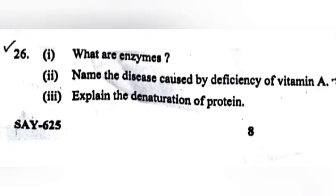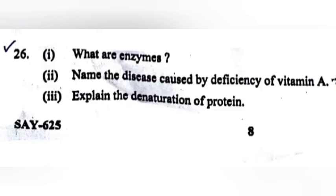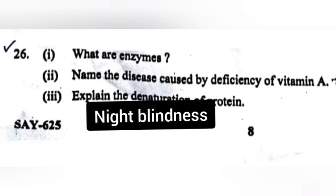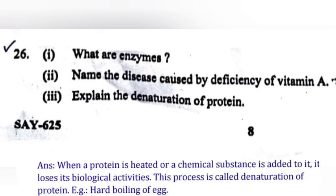Question 26, Part 1: What are enzymes? Answer: Enzymes are proteins that catalyze biological reactions. They are very specific in nature and catalyze only a particular reaction for a particular substrate. Question 27: Name the disease caused by deficiency of vitamin A. Answer: Night blindness. Part 3: Explain the denaturation of protein. Answer: When a protein is heated or a chemical substance is added to it, it loses its biological activities. This process is called denaturation of protein, e.g., hard boiling of egg.